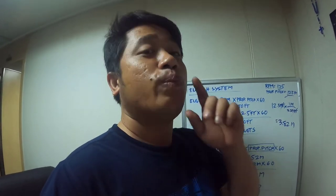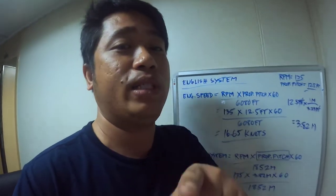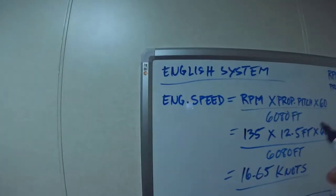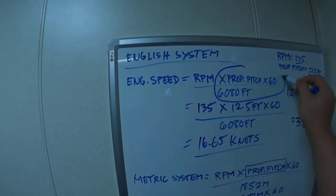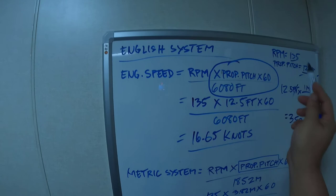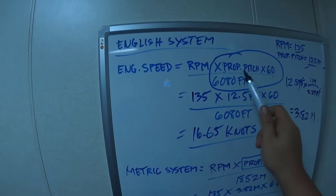So how do we get the pitch constant? It's very easy. The formula for pitch constant is just this part I circled: propeller pitch times 60 divided by 6080.